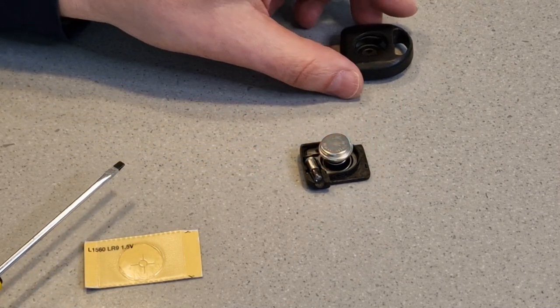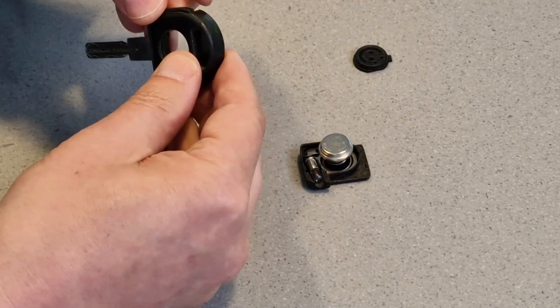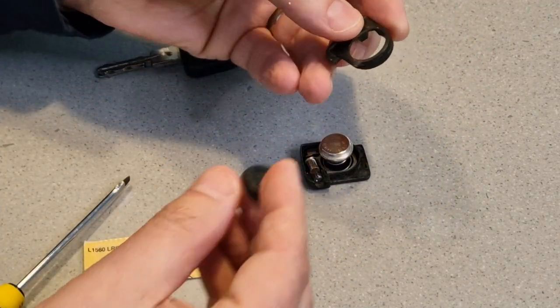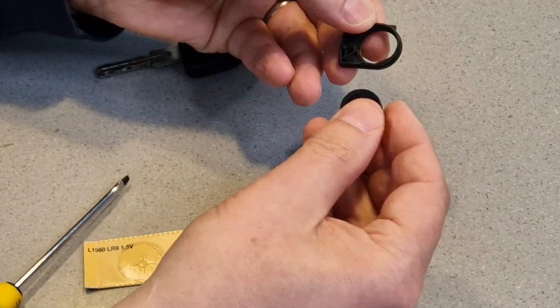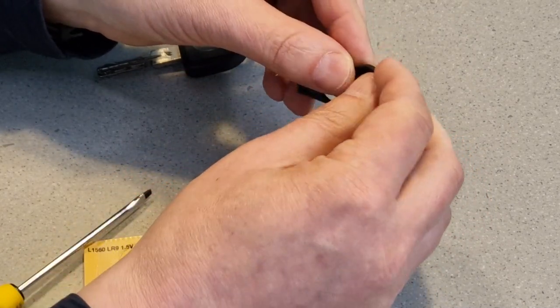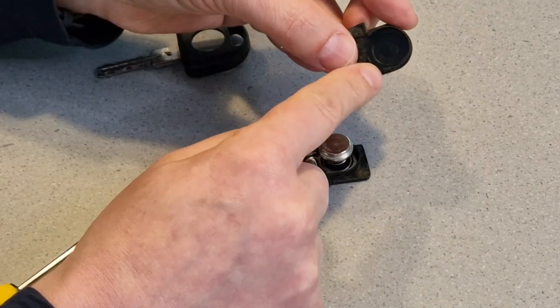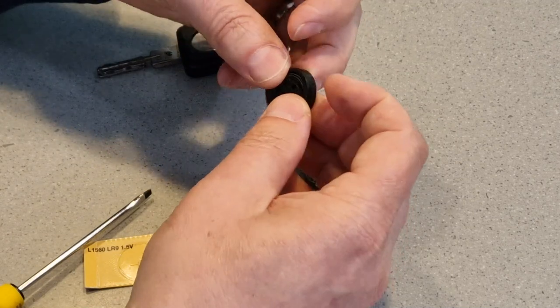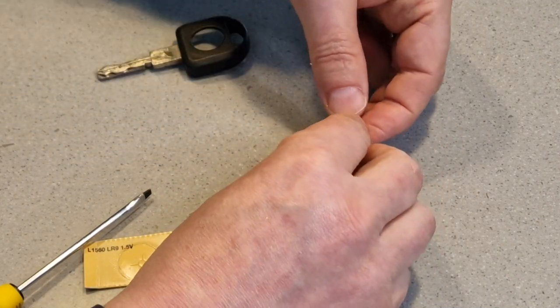But now that I know that is working, it's then just a case of getting the original other half of the case, putting the BMW logo piece back in. That has got a little key, I suppose, that makes it line up in only one specific location. So it lines up here. Then it's just a case of putting that back in, making sure that everything lines up.